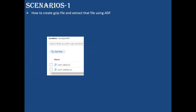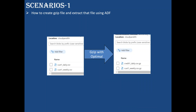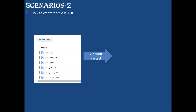There are two scenarios today. First, I'll show how to create the gzip file. We have CSV files, and using optimal compression, you can see that for each single CSV file, a corresponding .gz file is created. If the compression type is gzip, for each CSV file a corresponding gzip file will be created. Then we'll move on to the zip scenario.